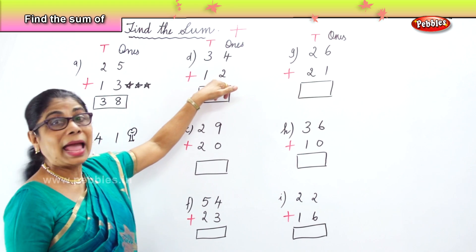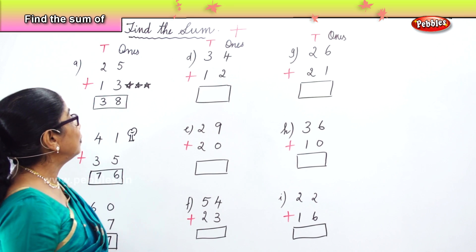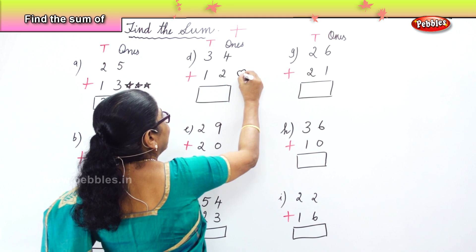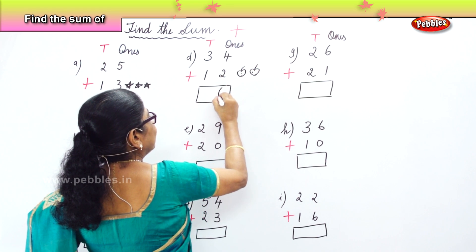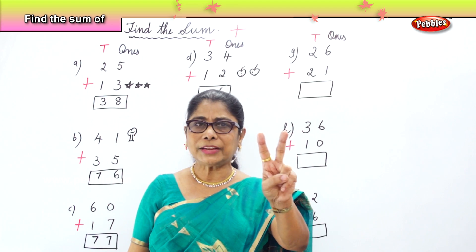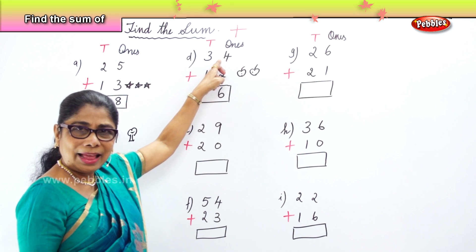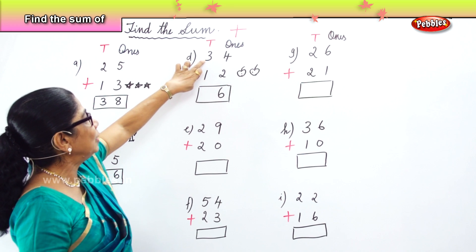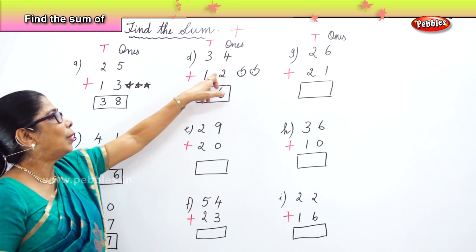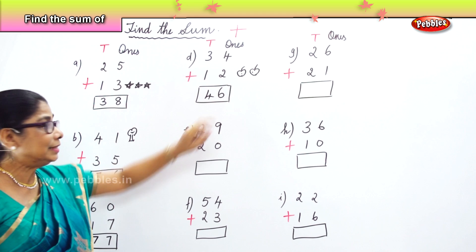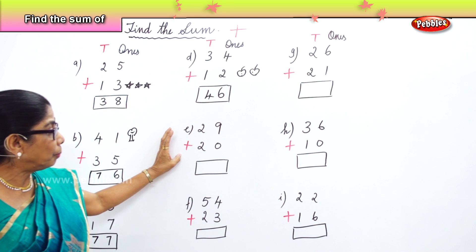Find the sum of thirty-four and twelve. Look at the ones: you have four and two. After four — five, six — four ones plus two ones give you six ones. Next, go to the tens place: three tens and one ten. Three plus one is four tens. So the sum of thirty-four and twelve is forty-six.